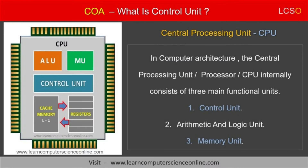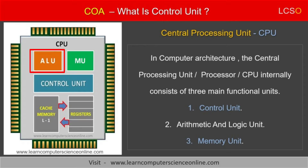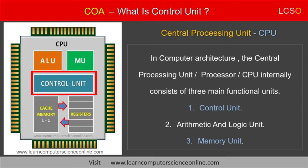Let us now discuss other important components of the CPU. The processor internally consists of three main functional units. The three CPU functional units are: first, the control unit; second, the arithmetic and logic unit; and third, the memory unit. So till now, we have studied what is a control unit and the two important functions of the processor.